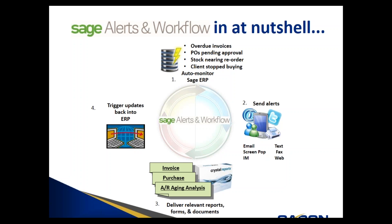The second component is the ability to send alerts in a number of different methods. Email is the most popular method, followed by text messaging as the second most popular. Alerts and Workflow can be graphical too, such as a bar chart or a pie chart — a picture really is worth a thousand words. The third component is deliverables, which is the actual content that the alerts will deliver. This can consist of reports, forms, statements, charts, or documents. And finally, the last component is the ability for triggers to update your ERP system, such as updating any records that were changed.